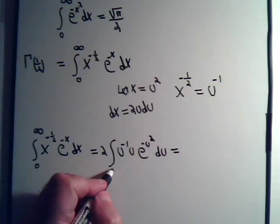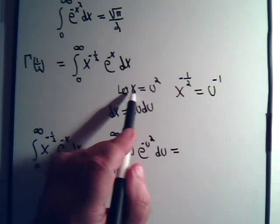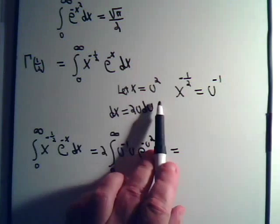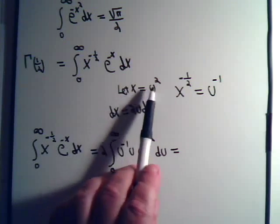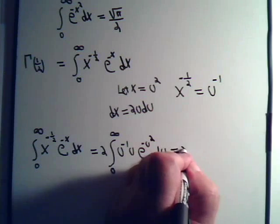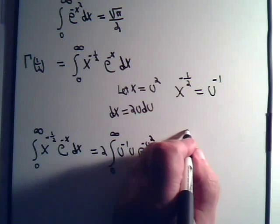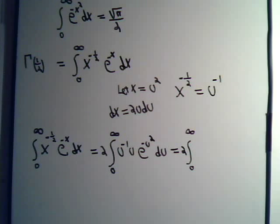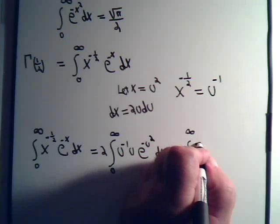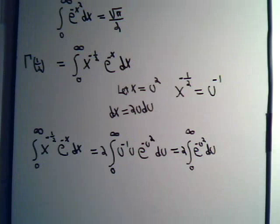If x goes from 0 to infinity, u will go from 0 to infinity. If x is 0, u is 0. If x is infinity, u is infinity. So this is equal to 2 times the integral from 0 to infinity of e to the minus u squared du.